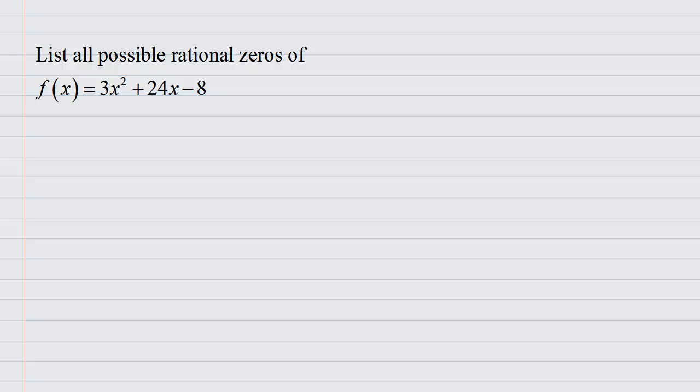List all possible rational zeros of the function 3x squared plus 24x minus 8. The rational root theorem says the following: Take the factors of your constant term.